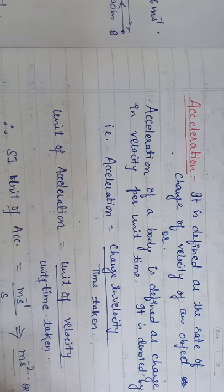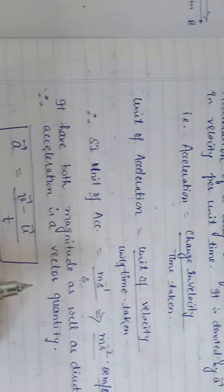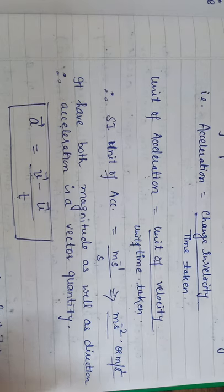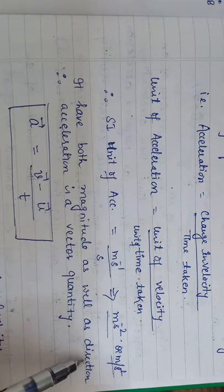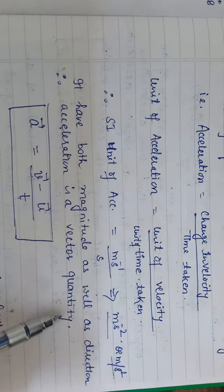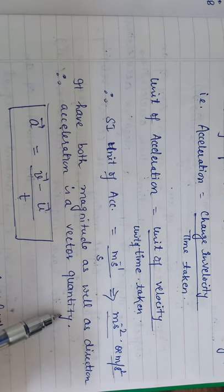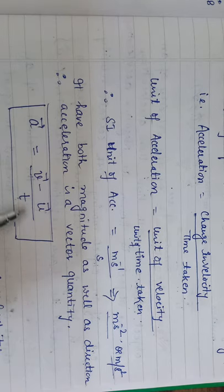That gives us meter per second square. So the SI unit of acceleration is meter per second square. Acceleration has both magnitude as well as direction, therefore acceleration is a vector quantity.